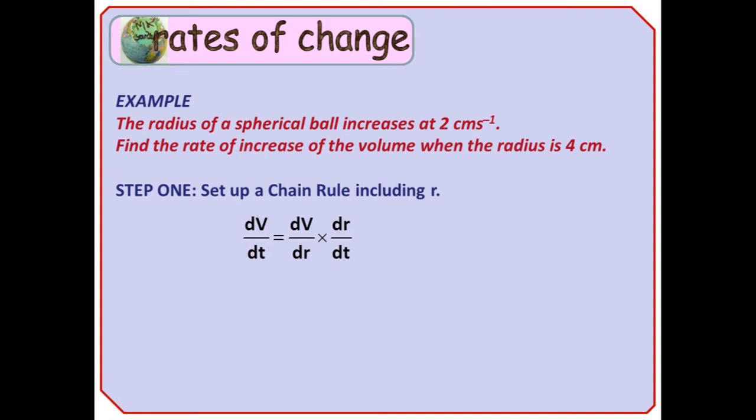In order to make our chain rule application work, we need a dr on the bottom to cancel out, and a dV on the top, so that we get that in our answer at the end. So, basically, dV by dt equals dV by dr times dr by dt.